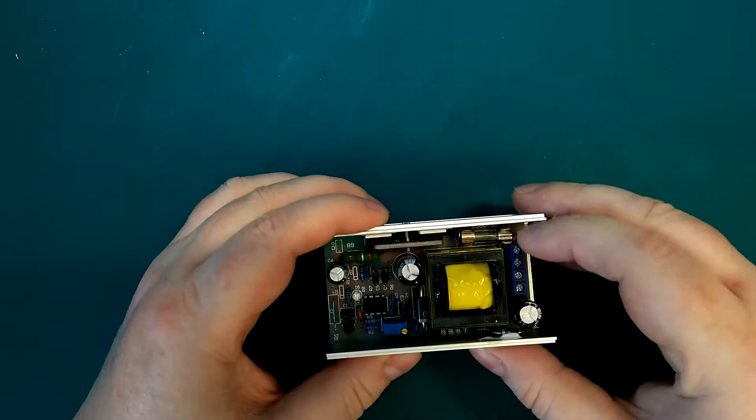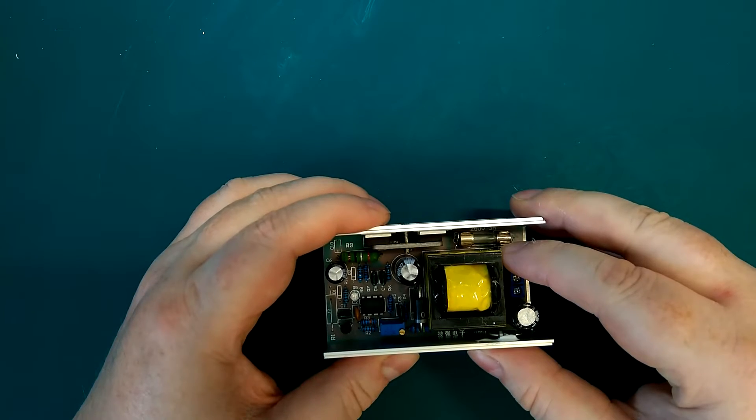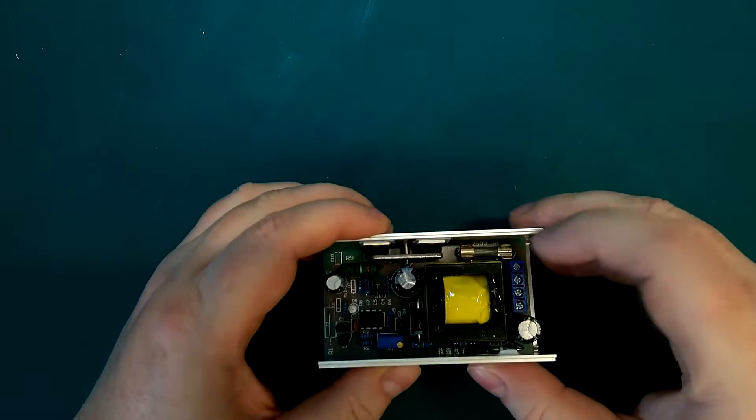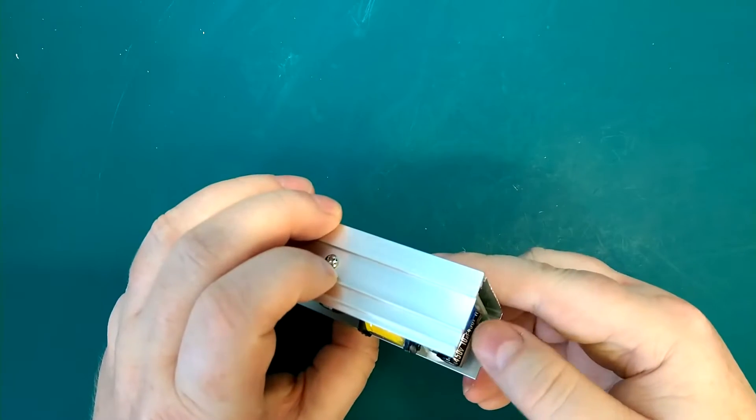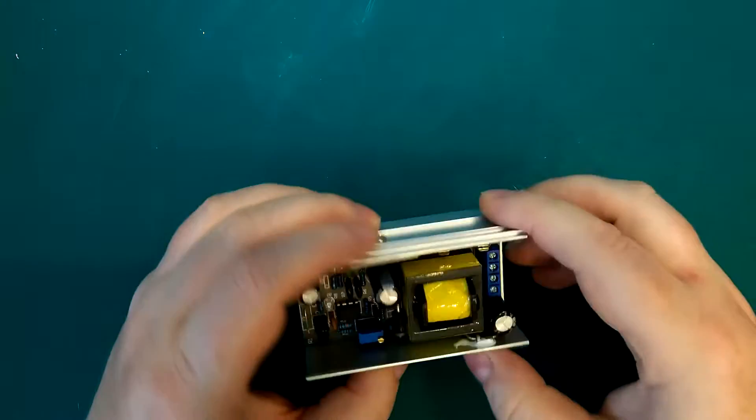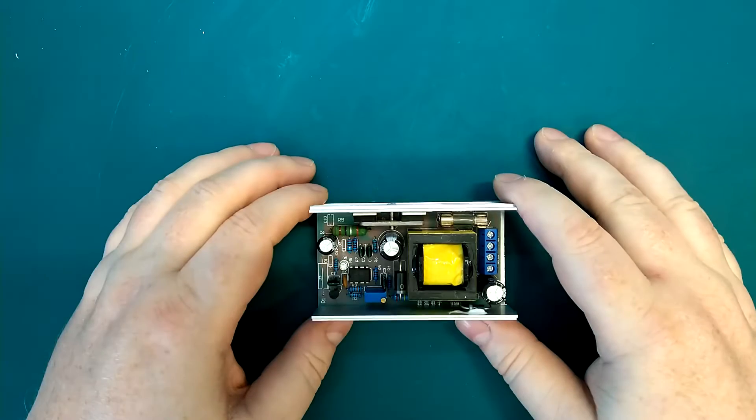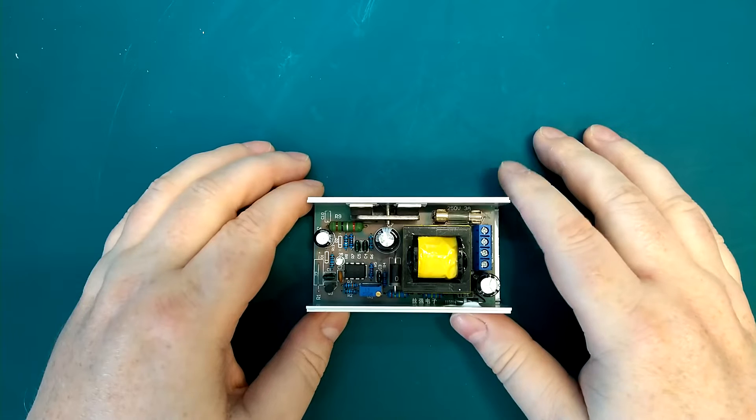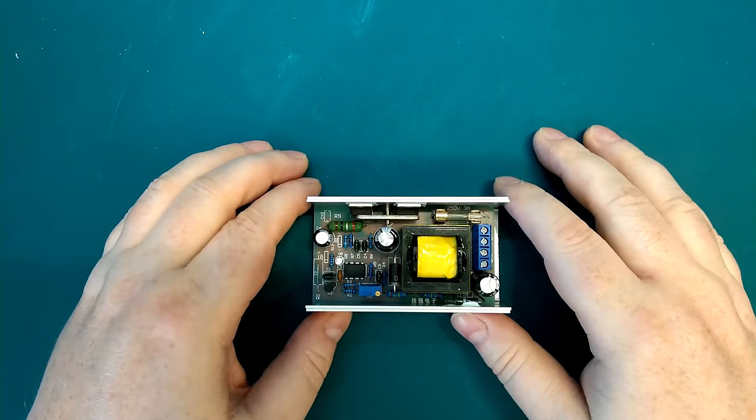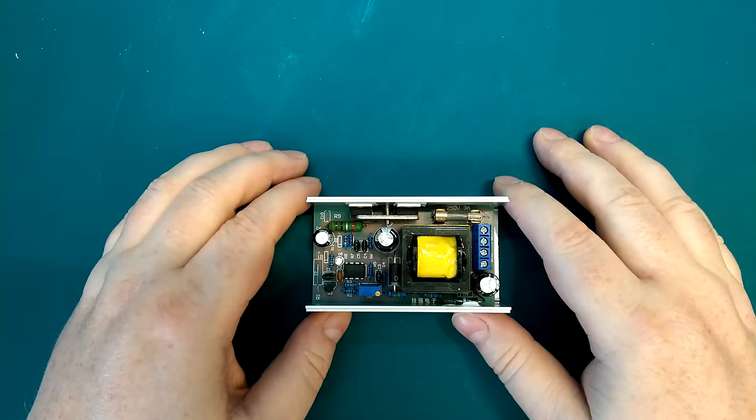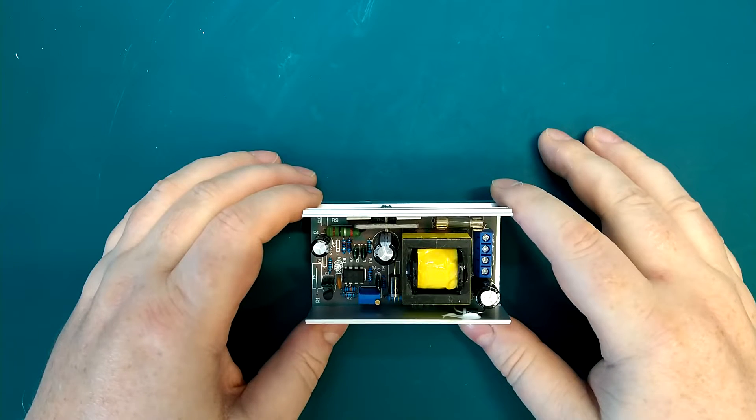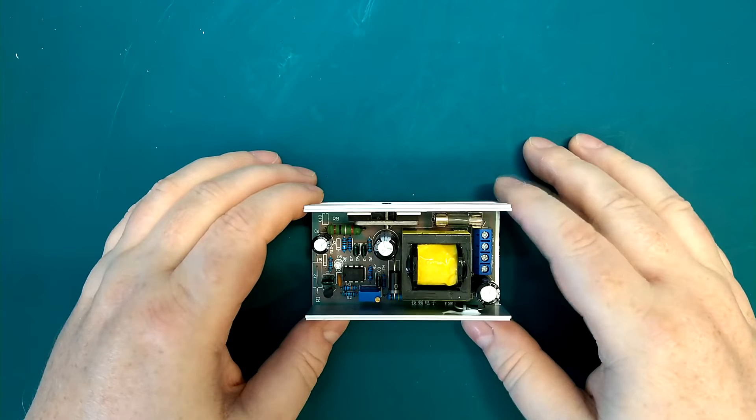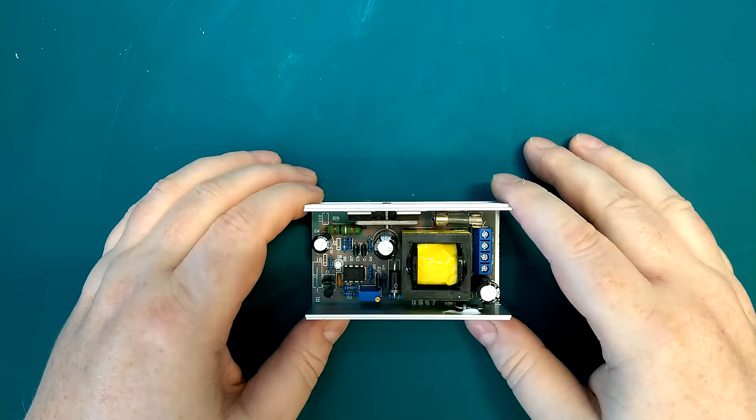We got a fuse on the input, it says 3 amp, and on the output we have a 450 volt 10 microfarad capacitor. I hope this one performs better than the previous one I tested. I'll add a link to it if anyone is interested, but it was a bit of a disappointment. I hope that this will be better, so I'll try hook it up and we'll start doing some measurements on it.